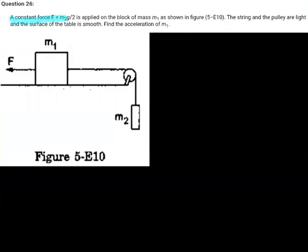A constant force f is equal to m2g by 2 is applied on the block of mass m1 as shown in figure. The string and the pulley are light and the surface of the table is smooth. Find the acceleration of m1.